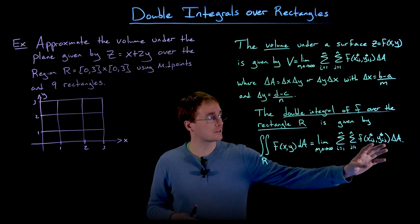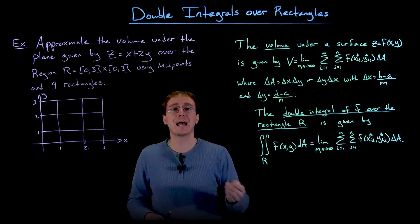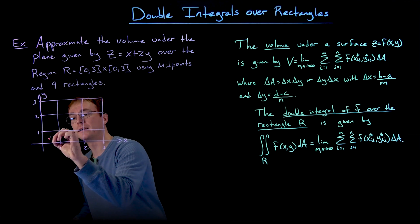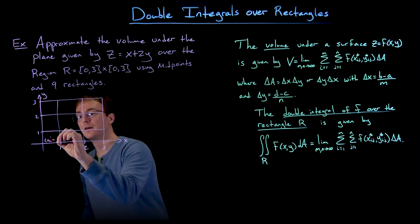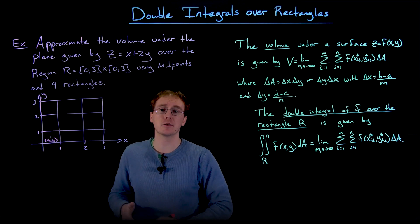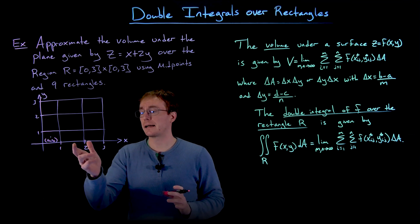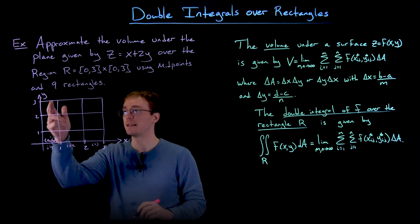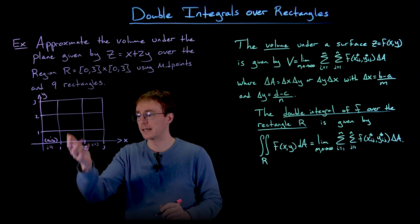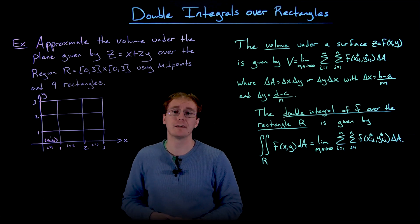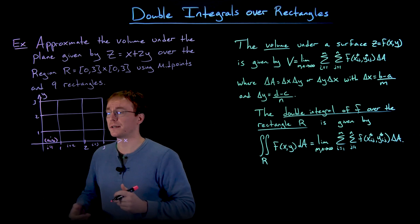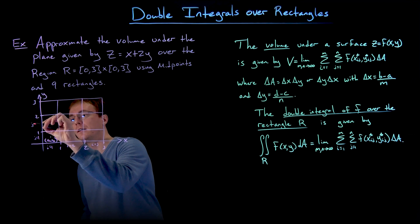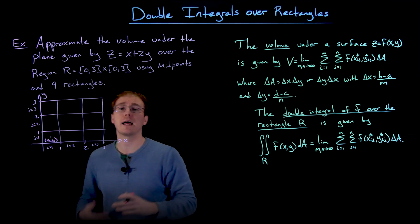To make sense of the notation, let's label all the sub-rectangles. The indices i and j describe the x and y coordinates of each sub-region. The first sub-rectangle uses sample point (x*_11, y*_11) because it uses the first x and first y value. We use i to index the x columns: i equals 1, 2, and 3 for the first, second, and third columns. Similarly j indexes the rows: j equals 1, 2, and 3 for the first, second, and third rows.